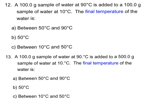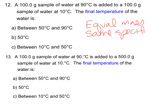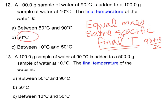On the AP you'll have to work problems without a calculator, so sometimes you just have to logic through things. A 100 gram sample of water at 90 degrees Celsius is added to a 100 gram sample of water at 10 degrees Celsius — what's the final temperature? We have equal masses of water with the same specific heat, so we can assume the final temperature is the average: 90 plus 10 divided by 2 equals about 50 degrees Celsius.